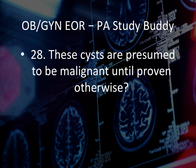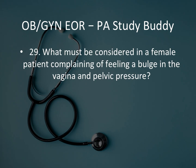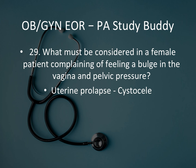Question 28: These cysts are presumed to be malignant until proven otherwise — that would be postmenopausal ovarian cysts. They'll give you a stem: the patient underwent exam, you found ovarian cysts, this is a postmenopausal female — presumed malignant until proven otherwise. Question 29: What must be considered in a female patient complaining of a feeling of bulge in the vagina and pelvic pressure? That is urinary prolapse — cystocele.